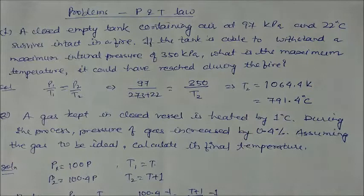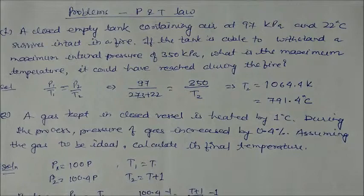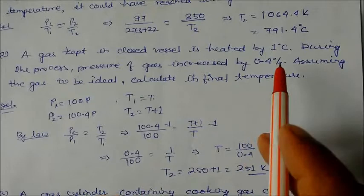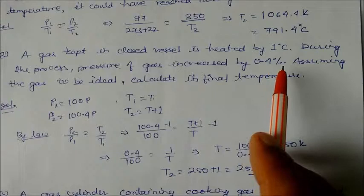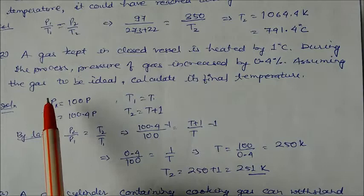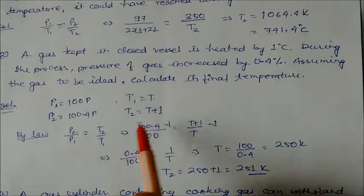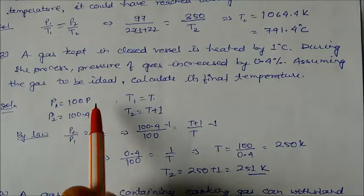Next question: a gas kept in a closed vessel is heated by 1°C. During the process, the pressure increases by 0.4%. Assuming ideal gas, calculate its final temperature. Let's assume P₁ = 100P, so P₂ = 100.4P. Temperature is T, increased by 1°C, so T₂ = T + 1.